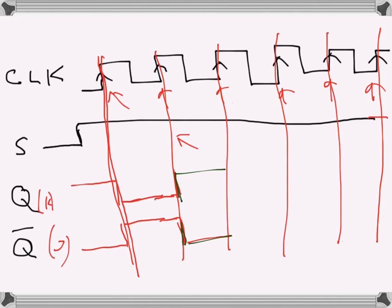When the third clock comes here, we can see that J is zero, so Q will become zero and Q̅ will become one. Similarly, when this clock comes because J is one...